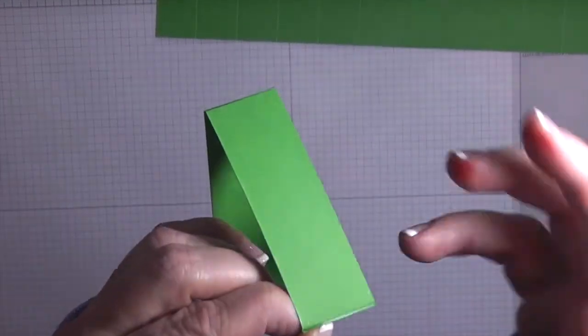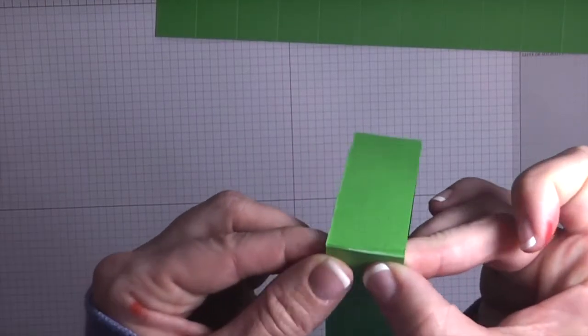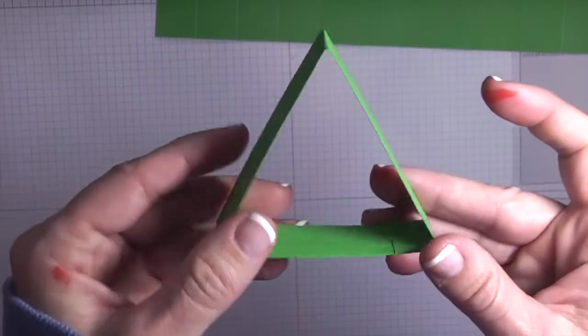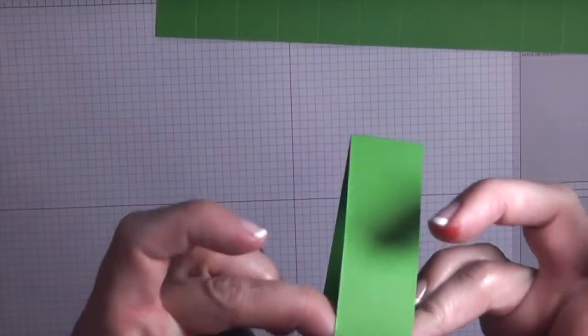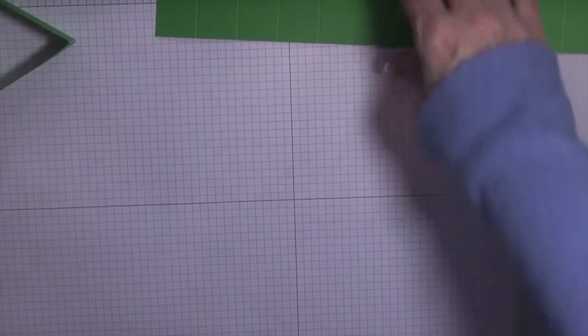So just put a little glue there and then attach this flap. This is what's going to make the frame of a Christmas tree. So you'll want to hold it for a bit so it bonds well.